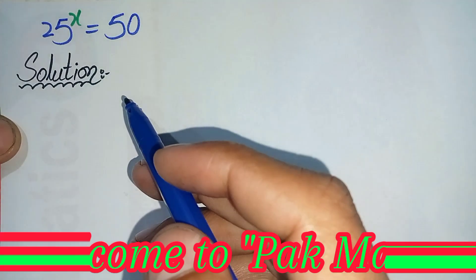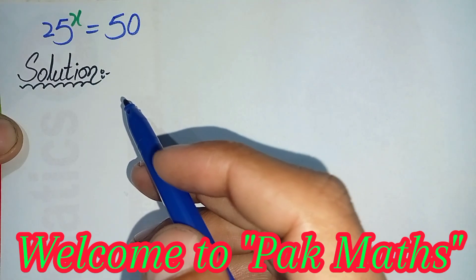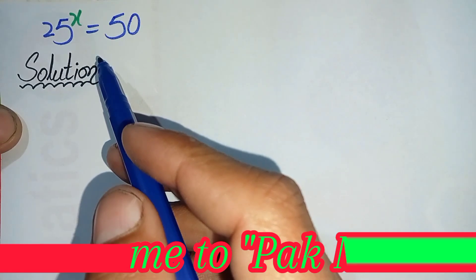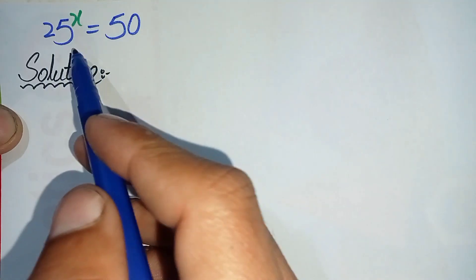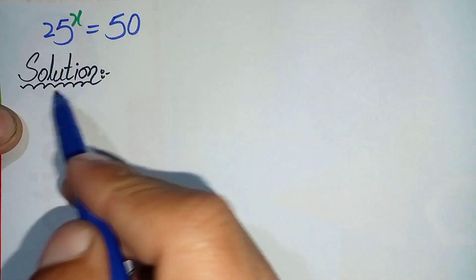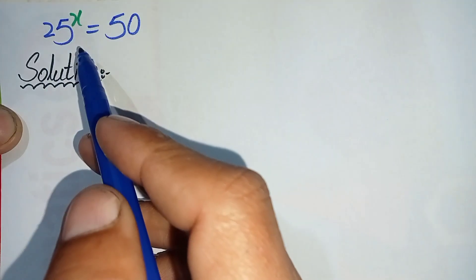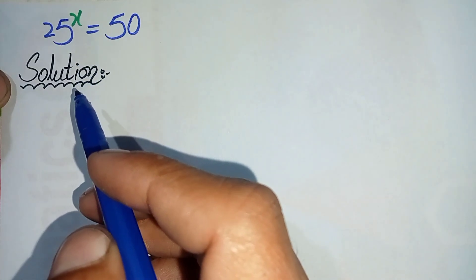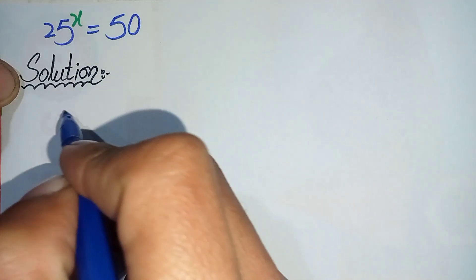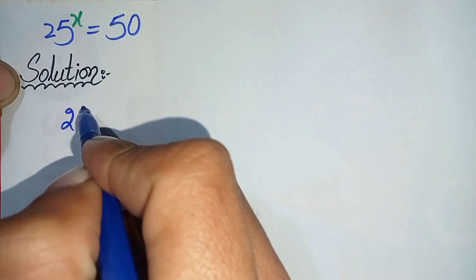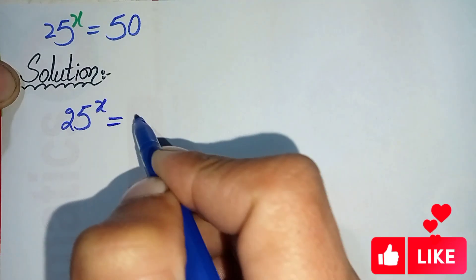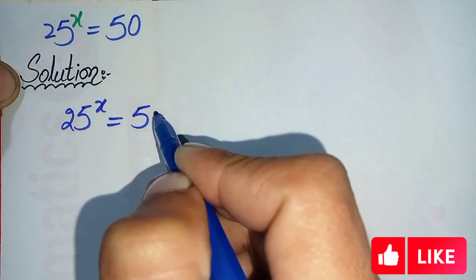Hello everyone, welcome to Parkmas. In this video I'm going to solve this nice exponential math problem step by step. First we will write the solution and rewrite the question. The question is: 25 raised to the power x is equal to 50.